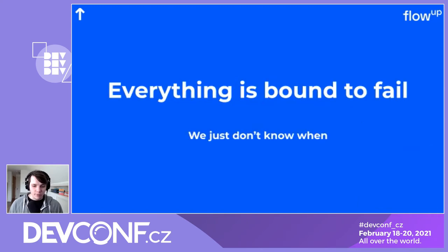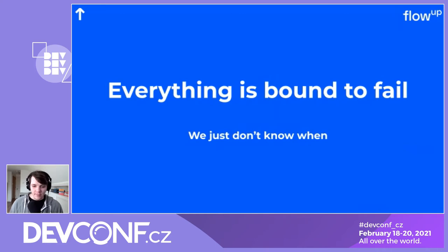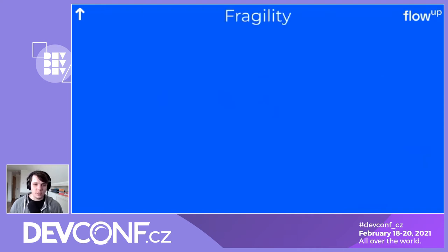I want to start with a very simple idea: everything is literally bound to fail. We just don't know when. I think this is like a mantra that every team using DevOps should have — that we just don't know when things will fail. They sometimes just will, and we need to be prepared. This is what the talk will be about, because what we can call this is a property of fragility.